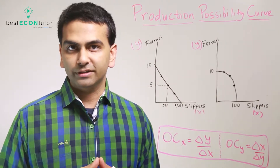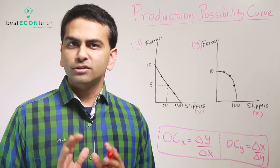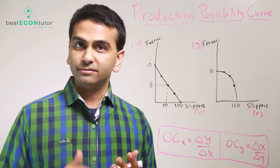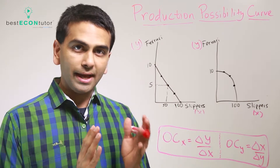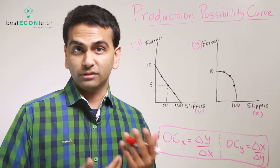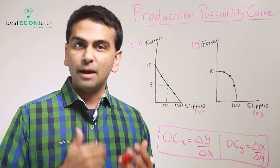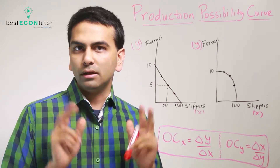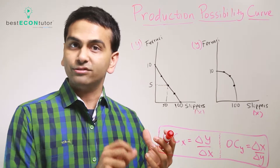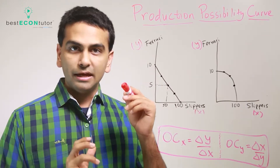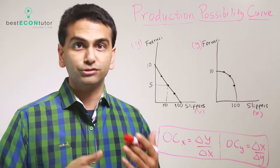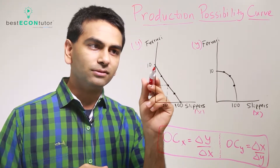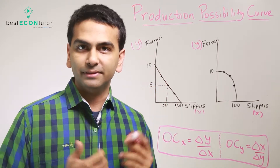Now let's look at production possibilities frontiers. Suppose you live in a world with no currency and there are only two goods: Ferraris and slippers. On one axis you measure how many slippers you can make, and on the y-axis how many Ferraris you can make. Any point on this plane is a bundle — a certain amount of slippers and a certain amount of Ferraris. If you graph all the points you can possibly produce, that's your production possibilities curve.